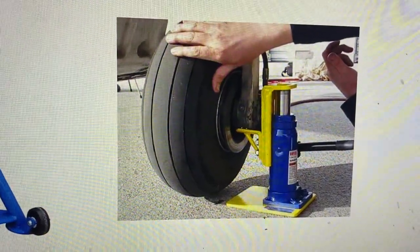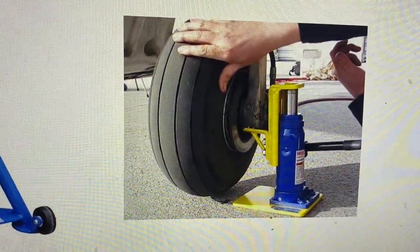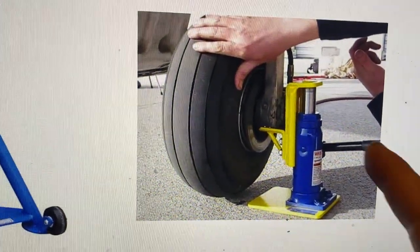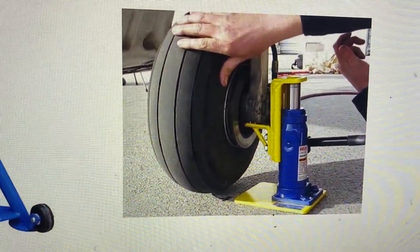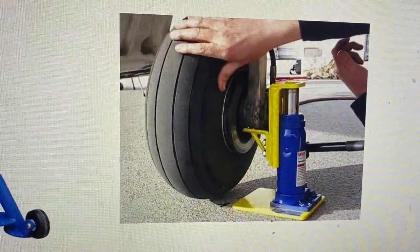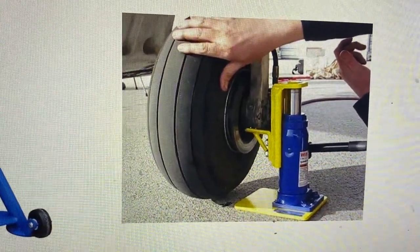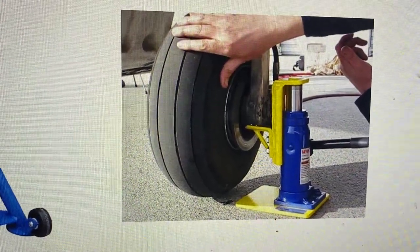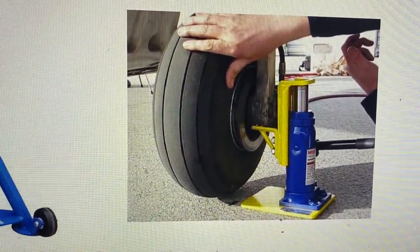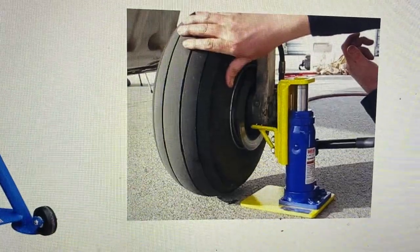You can also, some aircraft, you can use a floor jack. This is what they call a bottle jack. But one of the most important considerations that you need to think about when you jack an aircraft with this style jack is make sure that you chalk the other wheels. That's putting those triangle wedge-shaped blocks around the other tires.